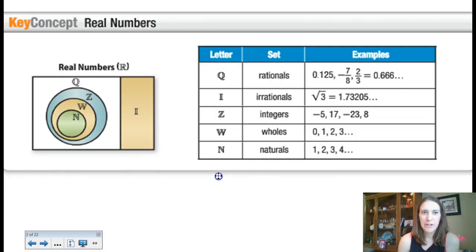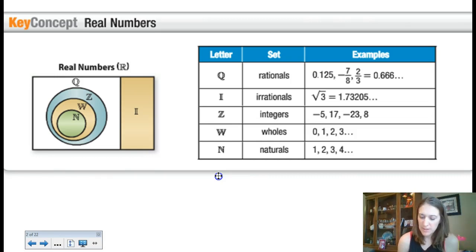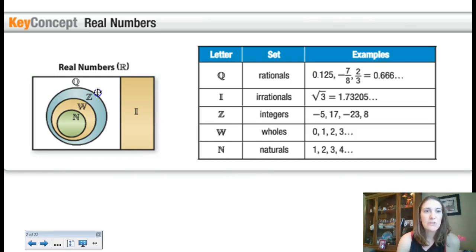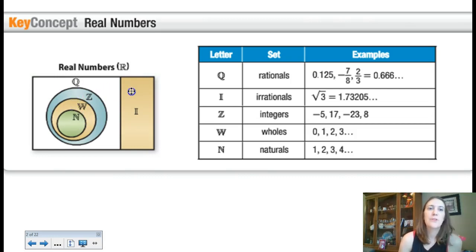There's a nice visual for the subset of real numbers. That whole entire box is what they consider real numbers — we're not talking about complex numbers in any way. Integers, whole numbers, and natural numbers are all set within each other, so they are all rational numbers. Irrational numbers are off to their own side on this diagram because they don't fall under any of those.